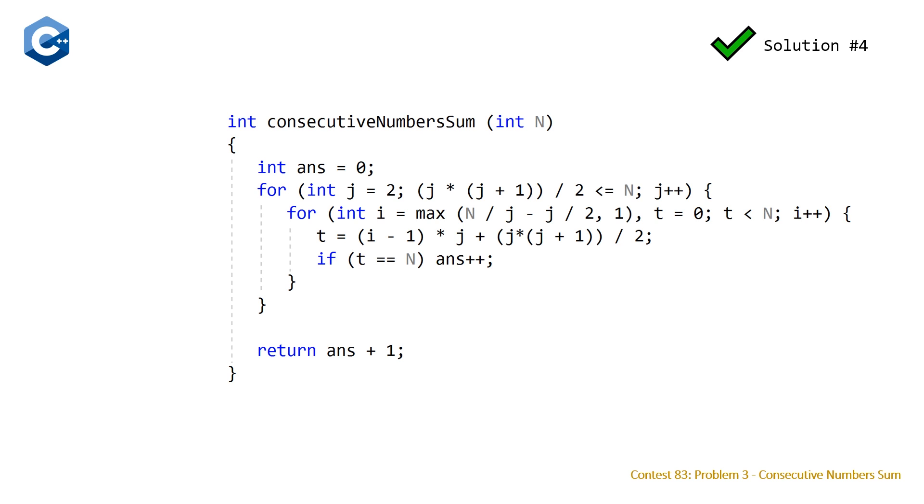The time complexity for this solution is going to be roughly big O of square root N. That's because we have J times J, which is J squared, less than N, which can be rearranged to J less than the square root of N. Our inner loop I believe is usually going to end up being pretty close to constant because this initial value for I is going to get us really close to the value that we need to satisfy this equation. If it doesn't satisfy it, T is going to pretty quickly exceed N, so we only really need to worry about the outside loop.